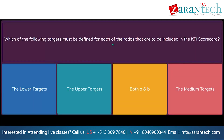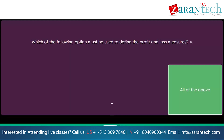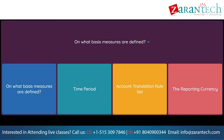Question: Which of the following targets must be defined for each of the ratios to be included in the KPI scorecard? Option 1: the lower targets. Option 2: the upper targets. Option 3: both A and B. Option 4: the medium targets. Question: Which of the following options must be used to define the profit and loss measures? Option 1: the account. Option 2: account summary. Option 3: any required tags. Option 4: all of the above. Question: On what basis are measures defined? Option 1: on what basis measures are defined. Option 2: time period. Option 3: account translation rule set. Option 4: the reporting currency.